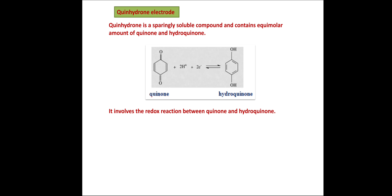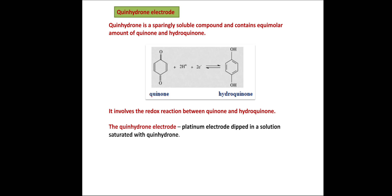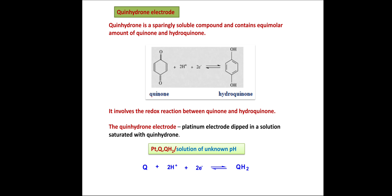How to set up a quinhydrone electrode? The given solution is saturated with quinhydrone and a platinum electrode is dipped in it. The reaction can be represented simply as: Q + 2H⁺ + 2e⁻ → QH₂.